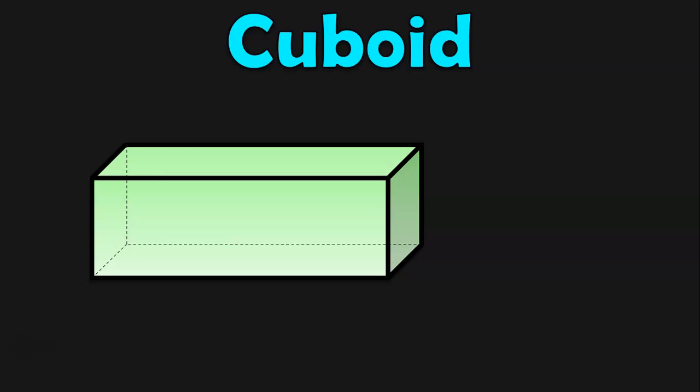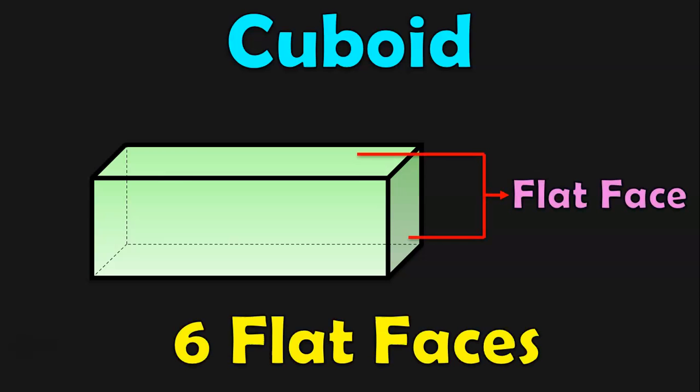Let us now take the example of a cuboid. A cuboid similarly has six flat faces. The top face, bottom face, the two side faces, the front face, and the back face. So totally there are six flat faces in a cuboid. So a cube and cuboid has only flat faces.